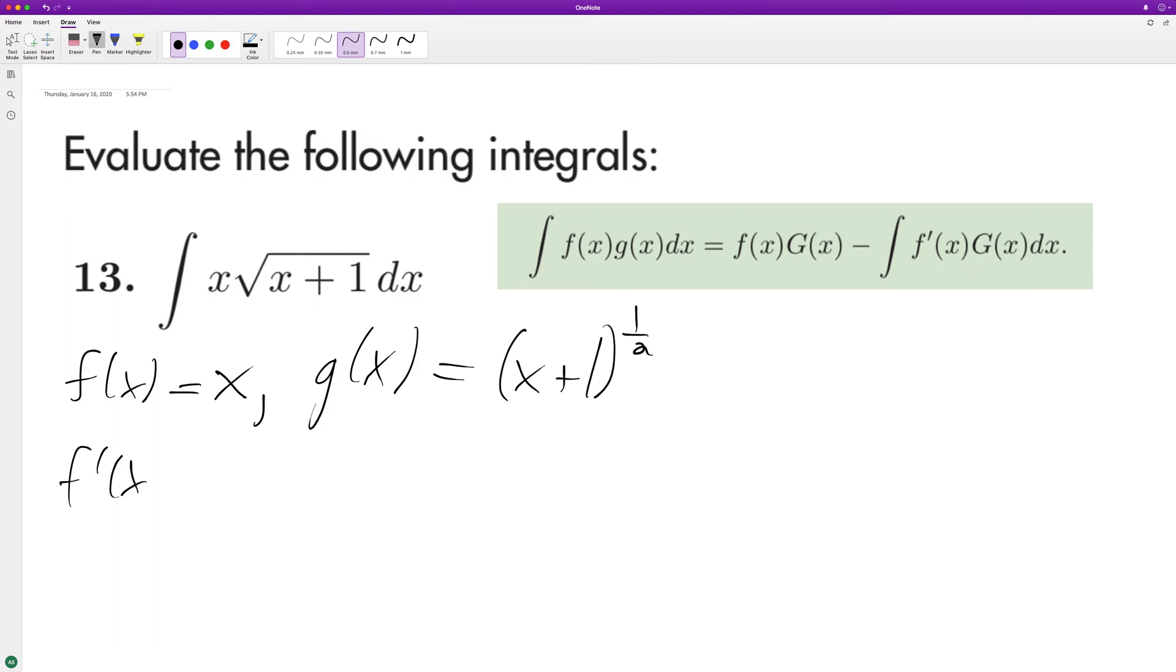f prime of x will be equal to 1, and G of x will be equal to... not one half, two-thirds. Two-thirds (x+1) raised to the 3/2. There we go.